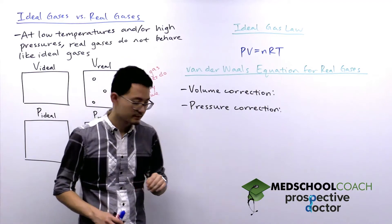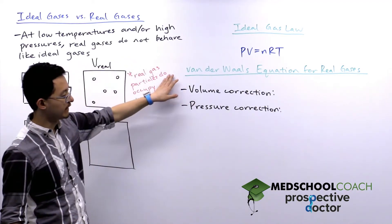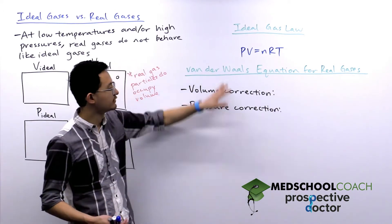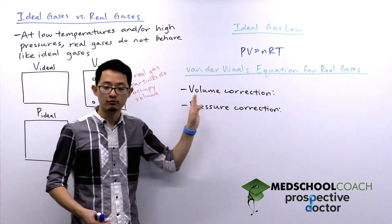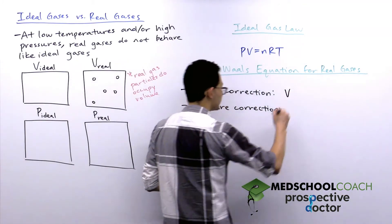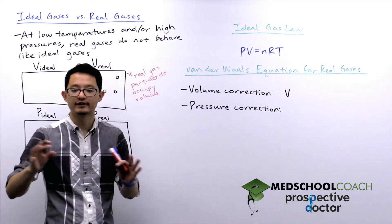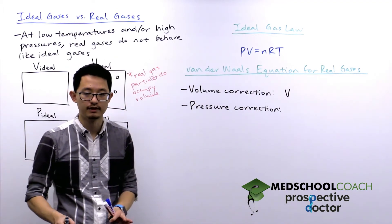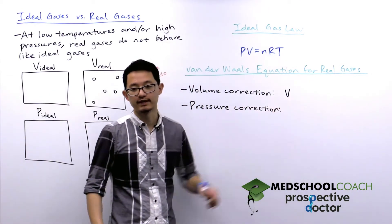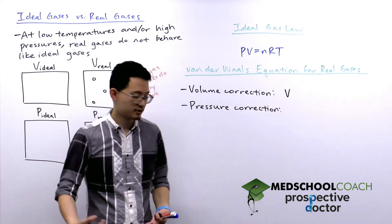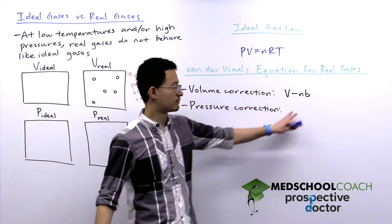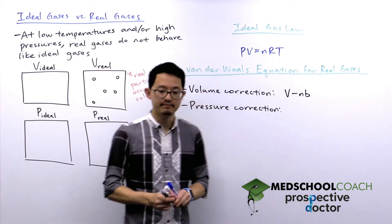Here on the top we have the ideal gas law: PV = nRT. Below, we have the van der Waals equation for real gases, which makes corrections to the ideal gas law. In terms of volume, ideal gases have the entire volume of the container available to them. For real gases, you take the volume of the container and subtract the volume occupied by the gas molecules, which equals the product of n and b.